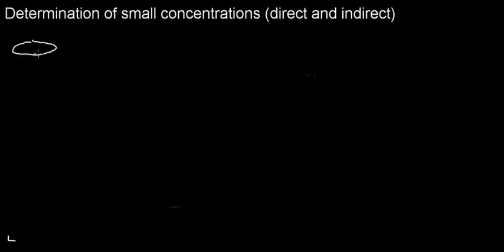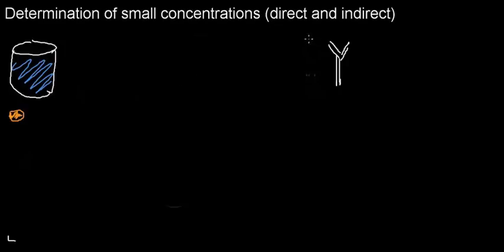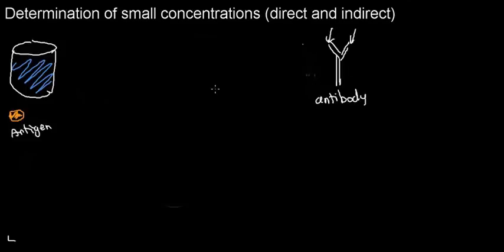Now we're talking about determination of small concentrations. I have some sort of sample, and I'm wondering: do these orange proteins exist in my solution? First, I'm going to prepare antibodies — Y-shaped molecules that are targeted to these molecules. The molecules are going to stick to the antibodies at the antigen binding site. The antigen, which is the targeted molecule, is going to dock at this docking site.